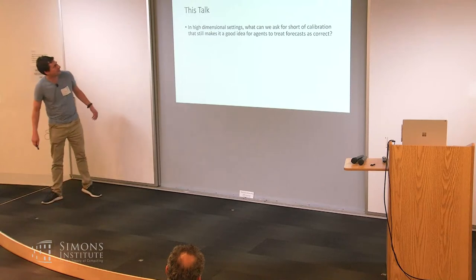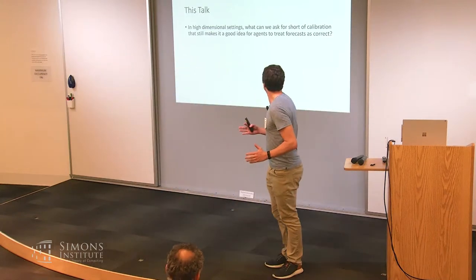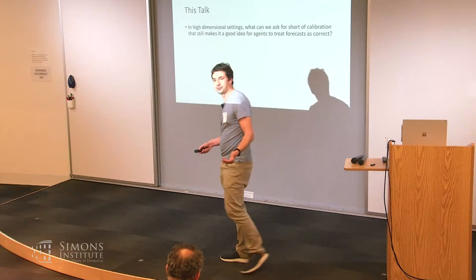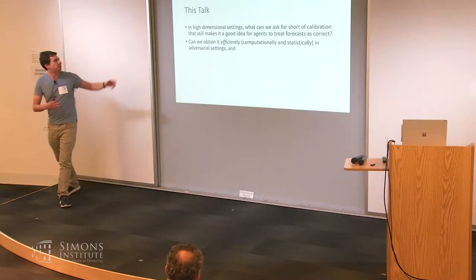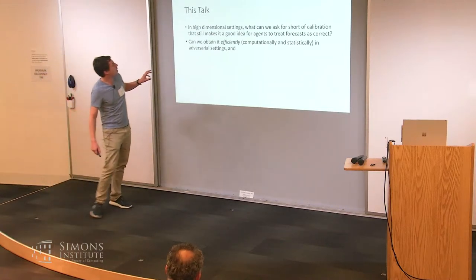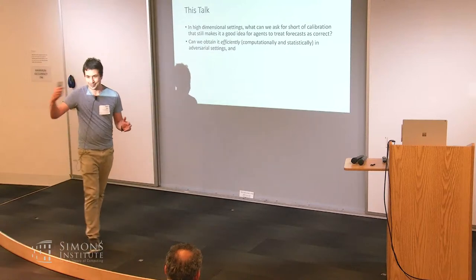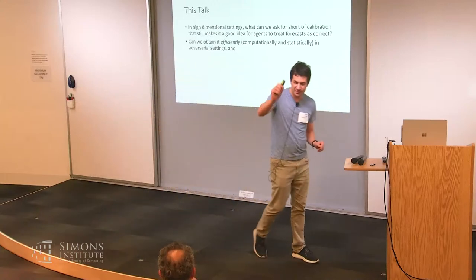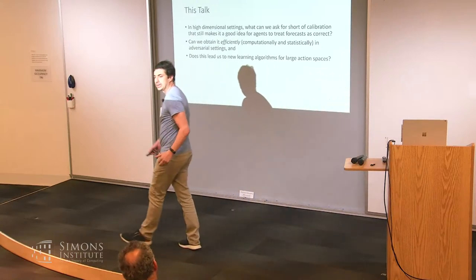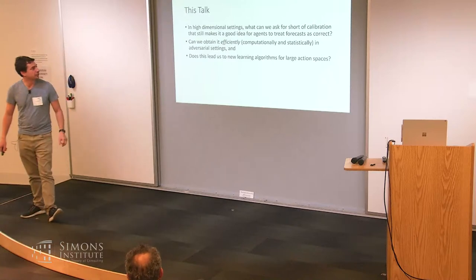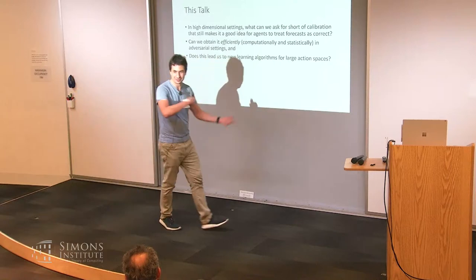So what do we do? In high-dimensional settings, I want to ask: is there something short of calibration we can ask for that still makes it a good idea for agents to treat the forecasts as correct? And can we obtain it efficiently? We want these good properties — even in adversarial settings — with running time polynomial in the relevant parameters, and bounds that go to zero at a polynomial rate. And does thinking about this question lead us to new learning algorithms, say in games with large action spaces?